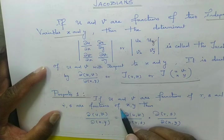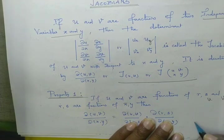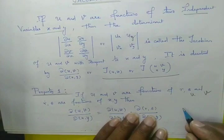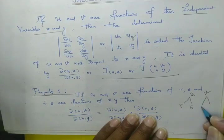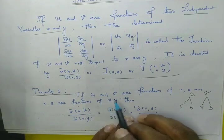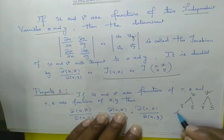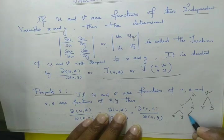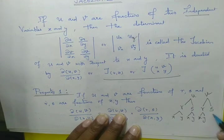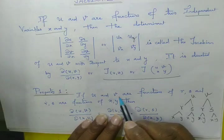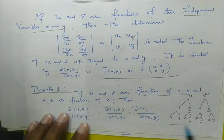Now u and v are functions of r and s, and r and s are functions of x and y. Then r is a function of x and y, and s is also a function of x and y. This is the meaning of u and v being functions of r and s, where r and s are functions of x and y.